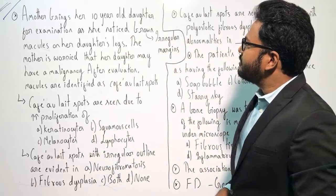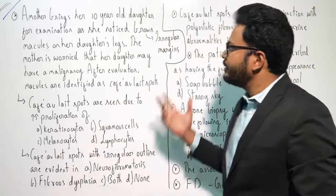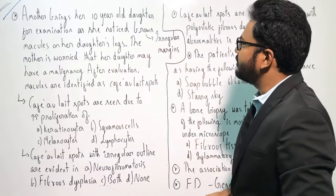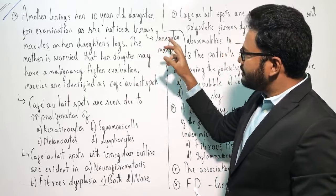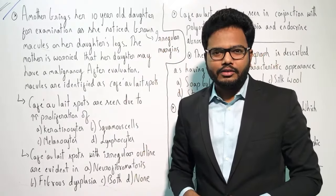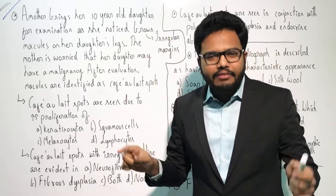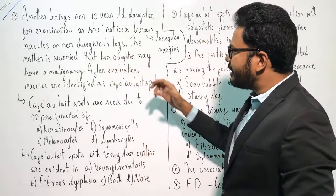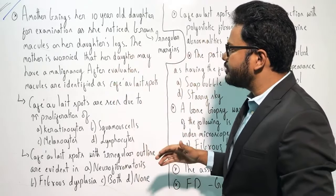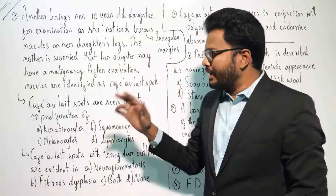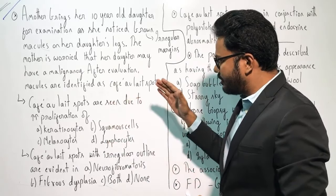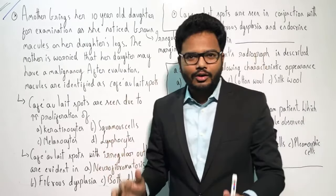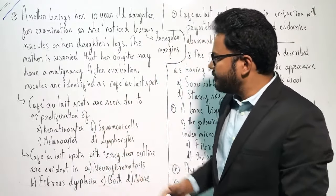A mother brings her 10-year-old daughter for examination as she noticed brown macules on her daughter's legs. Please make a note that the macules — the so-called macules or discoloration — are having jagged or irregular outlines. The mother is worried that her daughter may have a malignancy, and after evaluation, the macules are identified as café-au-lait spots. Let's go through the questions.